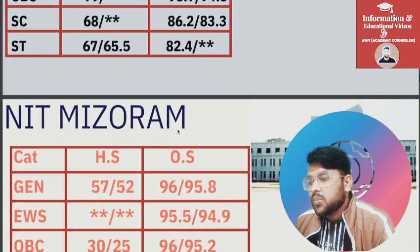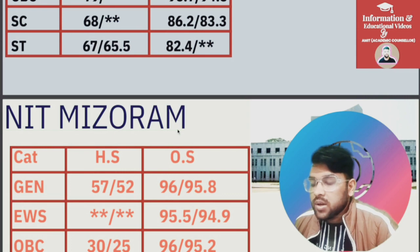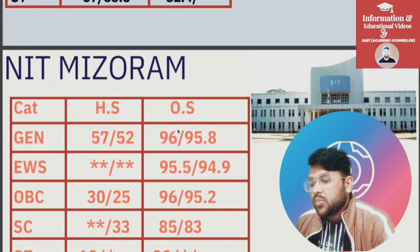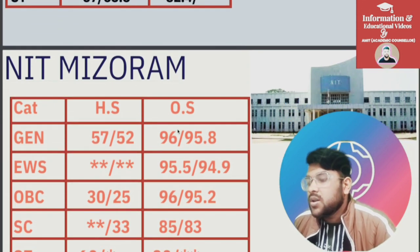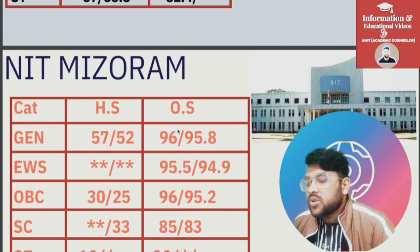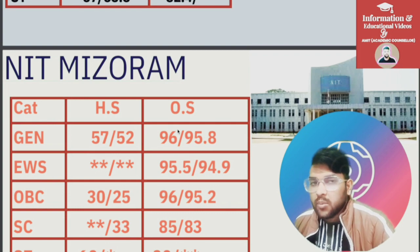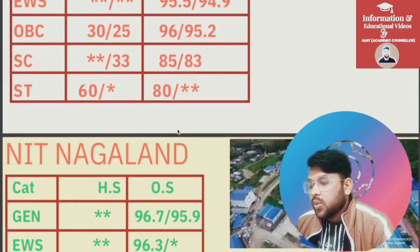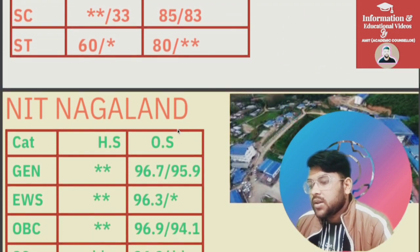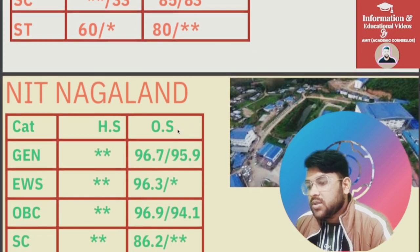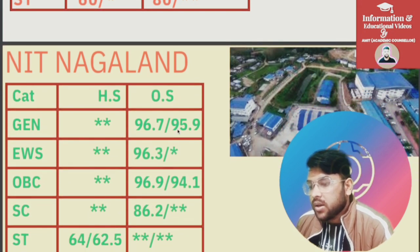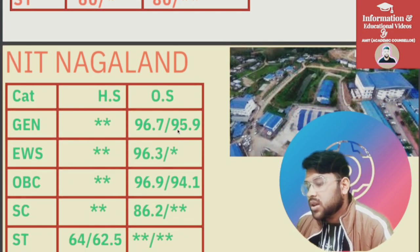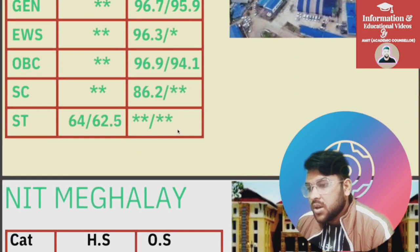For NIT Mizoram: General 96, EWS 95.5, OBC 96, SC 85, ST 80 percentile. I am talking about the CS branch here. For NIT Nagaland: General 96.7, EWS 96.3, OBC 96.9, SC 86.2, ST — these are for General, EWS, OBC, SC, ST respectively.